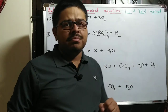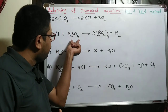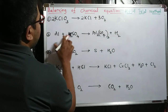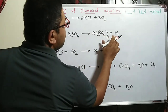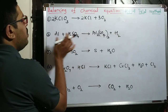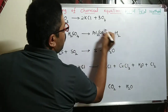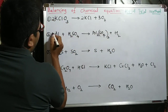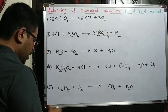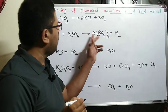Second example: aluminium reacts with sulfuric acid, forming aluminium sulfate and hydrogen gas. When aluminium reacts with acid it releases hydrogen gas. The largest molecule here is Al2(SO4)3. Al2 is there, so write 2 before Al on the left. Al2 is there on the right as well, hence write 2 there. Aluminium is now balanced.